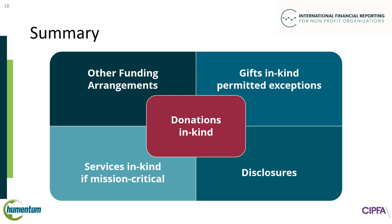In summary, NPOs generally recognize revenue from donations in kind at fair value on receipt, when part of an Other Funding Arrangement. INPAG includes some exceptions that take account of cost-benefit considerations. For gifts in kind, NPOs can choose to apply permitted exceptions to recognition. For services in kind, NPOs must recognize revenue if the services are mission critical. Whenever revenue is not recognized on receipt, NPOs are encouraged to disclose useful information.